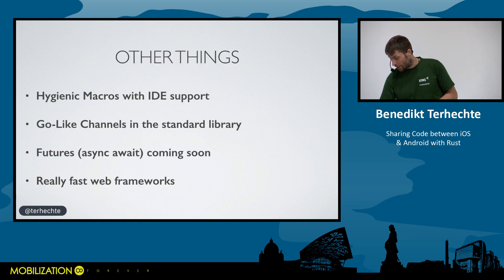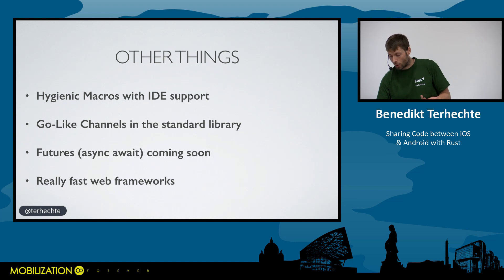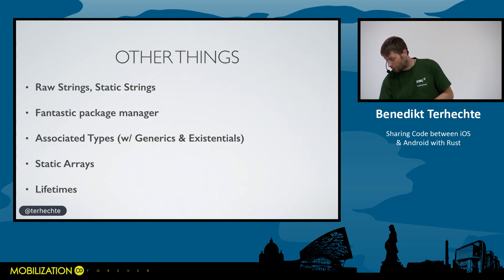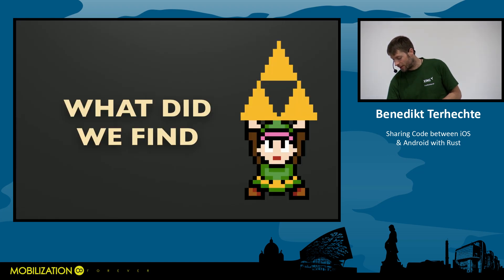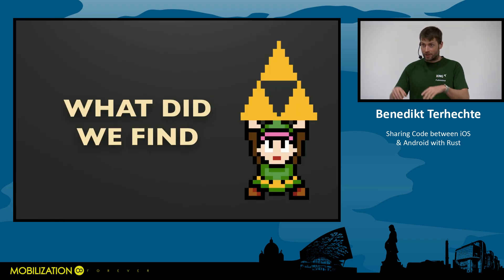Rust has several other features worth mentioning: hygienic macros with IDE support, Go-like channels in the standard library, futures coming soon with async/await, fast web frameworks, raw and static strings, a fantastic package manager, associated types with generics, extensions, static arrays, and lifetimes.